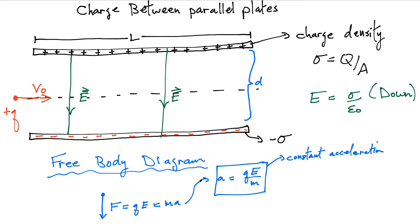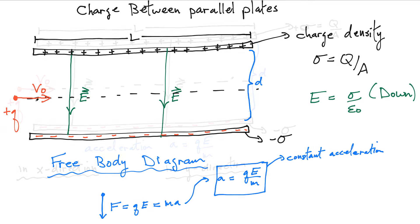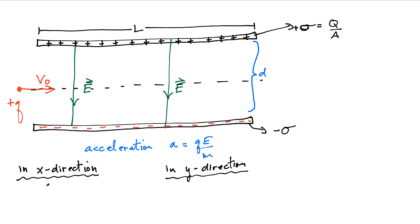Since we have constant acceleration, we can use all our kinematic equations to analyze the motion. In the x direction, the displacement delta-x is simply equal to the initial velocity V₀ times time. The velocity in the x direction at any time equals the initial velocity — there's no acceleration in the x direction because the electric field is constant and acts only in y.